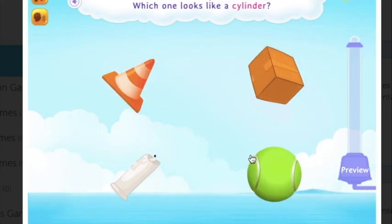Look at the pictures. Which one looks like a cylinder? This one has a circle base and one point, that's a cone. This one has one, two, three, four, five, six faces, that's a cube. This is like a ball, it's a sphere. So this one looks like a cylinder. It has two circular faces. Good going!